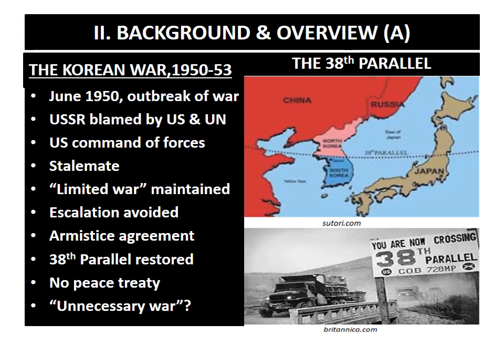The war officially drew to an end with the signing of the Armistice Agreement on the 23rd of July 1953. As seen on the map, the 38th parallel was officially re-established as the dividing line between the two Koreas, and on the picture you can see how the 38th parallel looked like in the early 1950s.